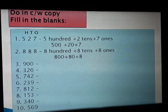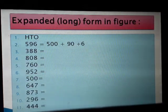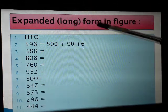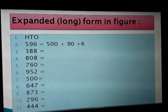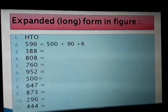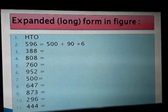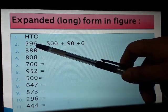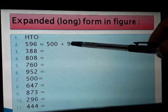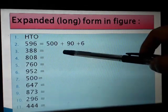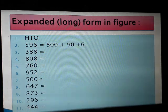Next is the expanded form — also called the long form. In figure, always remember that figure means you have to write zeros. One example has been done for you: five hundred ninety-six. To expand means to stretch — like a rubber band. If you stretch it, it becomes long; if you leave it, it comes back. So 596 expanded in figure: 500 plus 90 plus 6. The value must not change. You will do all these sums in your classwork copy.